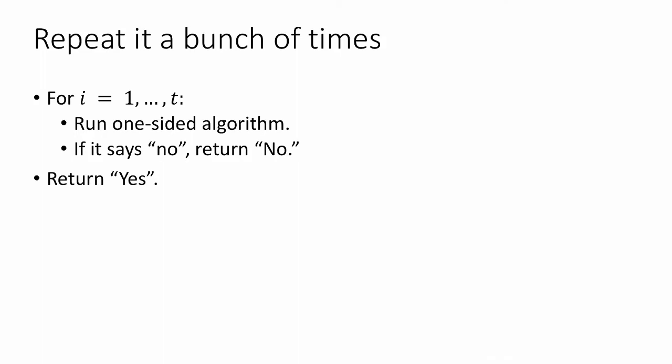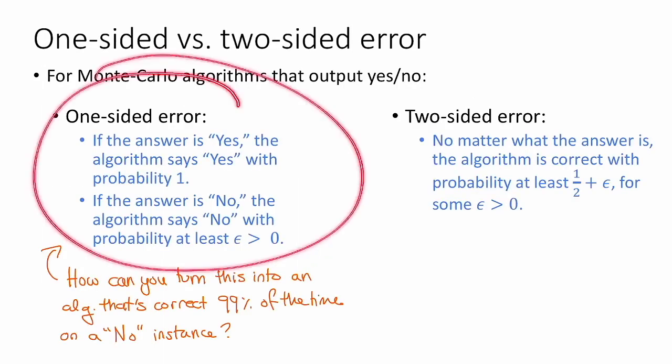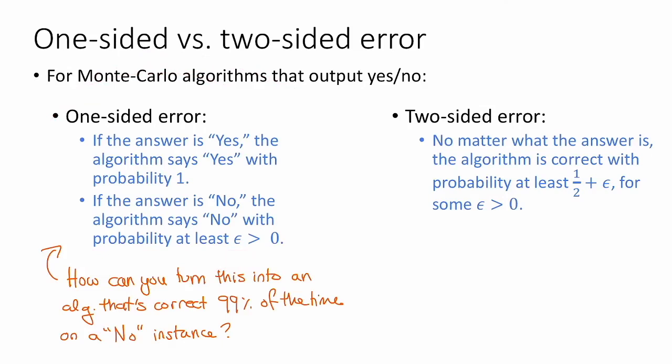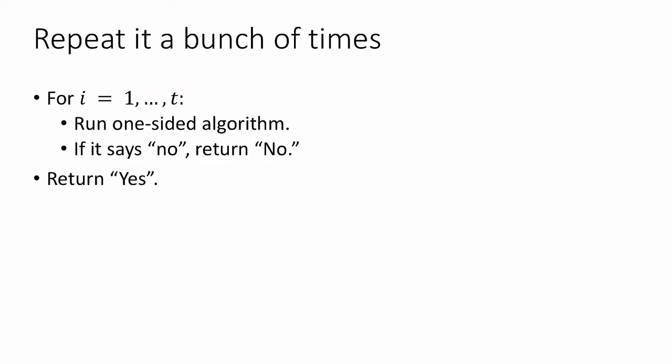Okay, so you might have figured out that the solution is to just repeat the algorithm a bunch of times. That is, let's say we have an algorithm that satisfies this guarantee with some teeny epsilon greater than zero, and let's just run that algorithm a bunch of times. So for i equals 1 up to t, we're going to run the one-sided algorithm. If it says no, then we know that with probability 1 the correct answer is no, so we'll return no. And if we do this all t times and we never see a no, we'll say okay, well I guess the answer is yes, and we'll return yes. So I claim that if t is large enough, this will actually have a very high success probability, or very low failure probability, so let's work that out.